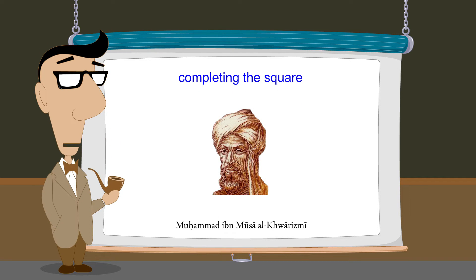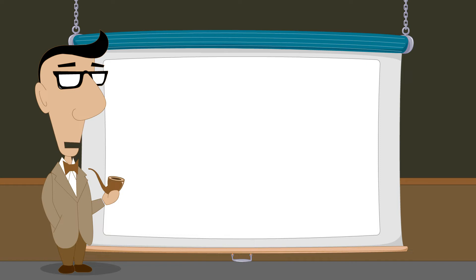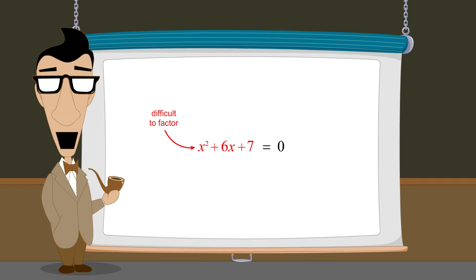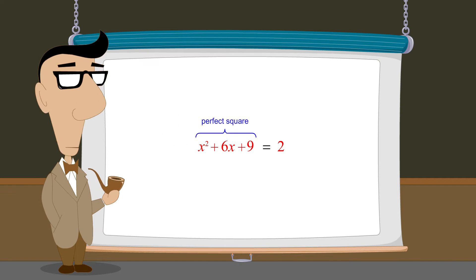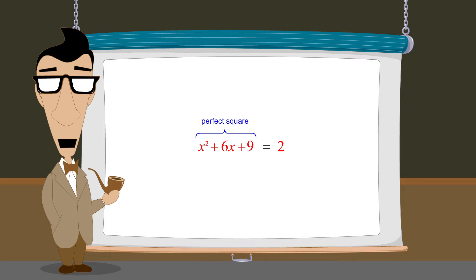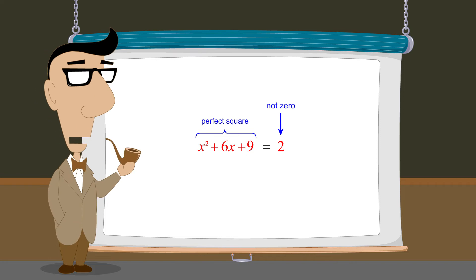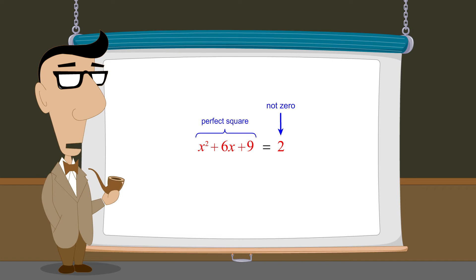The basic idea behind Completing the Square is to transform a quadratic equation containing a quadratic expression that is difficult to factor into an equation with identical solutions but containing a quadratic expression that is a perfect square. Since this transformation also changes the right side of the equation, the perfect square quadratic expression ends up being equated to a non-zero constant instead of zero.